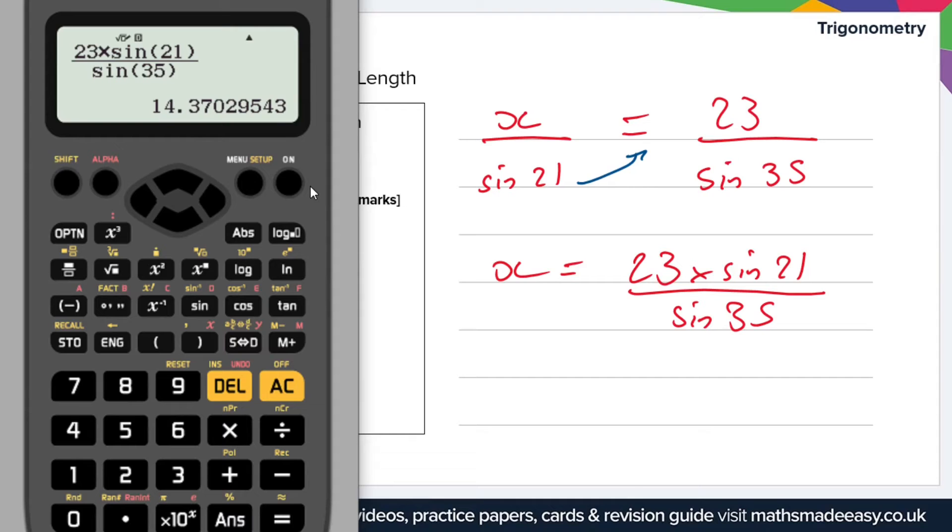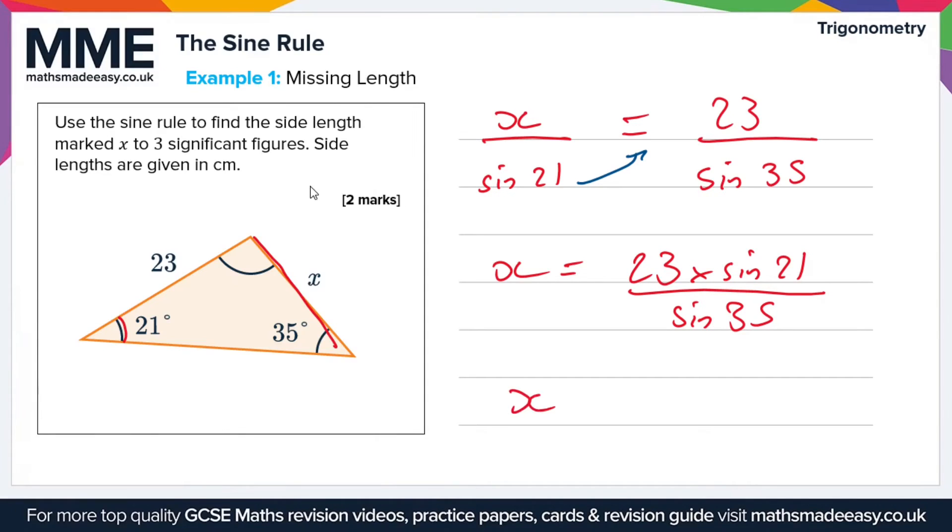And that's going to give us a value of 14.37. So X equals 14.37, or 14.4, seen as though it asks us to give it to three significant figures. Remember to put the units, just because they're given in the question.